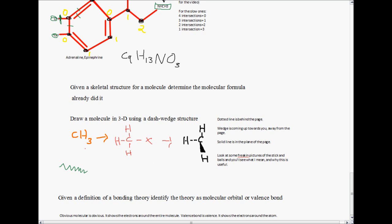Now, given a definition of a bonding theory, identify the theory as molecular orbital or valence bond. Molecular is obvious. It shows the electrons around the entire molecule, so that's molecular. Valence bond is valence. It shows the electrons around an atom. So, valence deals with an atom. Molecular deals with the entire molecule.